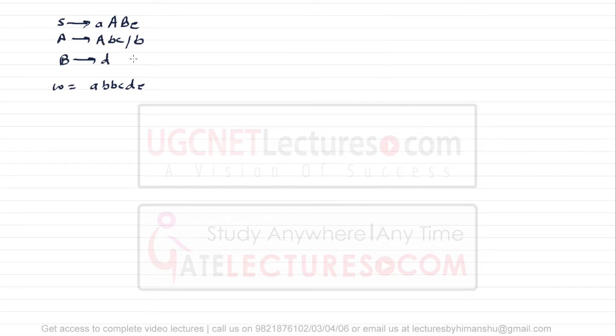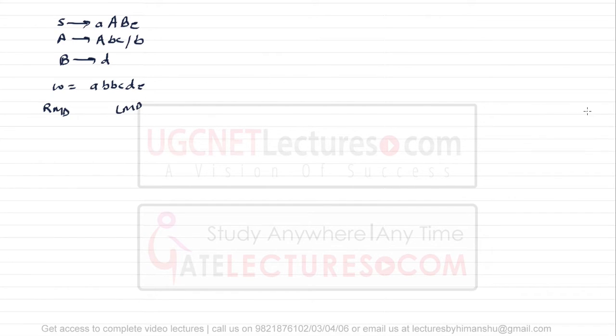We have seen this example in the previous video, but some students may be getting confused between Right Most Derivation (RMD) and Left Most Derivation (LMD). We already discussed RMD and LMD in other videos, but just for revision I'm explaining them again. As I told you, bottom-up parsers use the reverse of right most derivation.